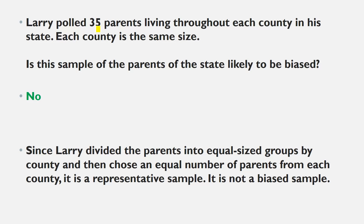Suppose Larry polled 35 parents living throughout each county in his state, and each county is the same size. Is this biased or unbiased? The answer is no. Since Larry divided the parents into equal-size groups by county and then chose an equal number of parents — 35 parents — from each county, it is not a biased sample.